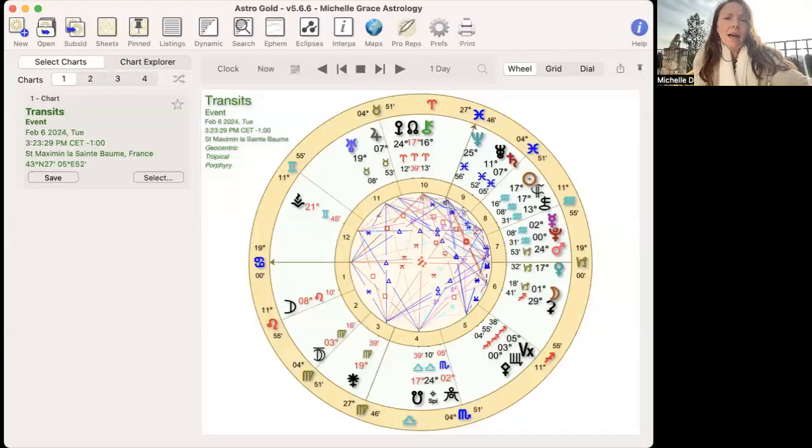We start with this Capricorn moon today. I recently taught when we were in Paris, a workshop, a day-long workshop. And in that I was talking about the Cardinal Cross as the axis of creation. Basically here we have Cancer, Capricorn, Libra, Aries, right?